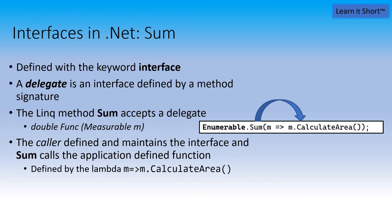That's what sum calls in order to get the individual double values that needed to be added together. So the caller defined and maintains that interface. The dotnet library implementers defined and implement the interface func that is required. We have to implement that. So the caller defined it and the callee has to implement it. So again, that inversion, that inversion of control, that dependency upside down, that dependency inversion. The lambda that we're passing in m arrow m calculate area, that is the on the fly definition of our func delegate. So the application programmer defined that.